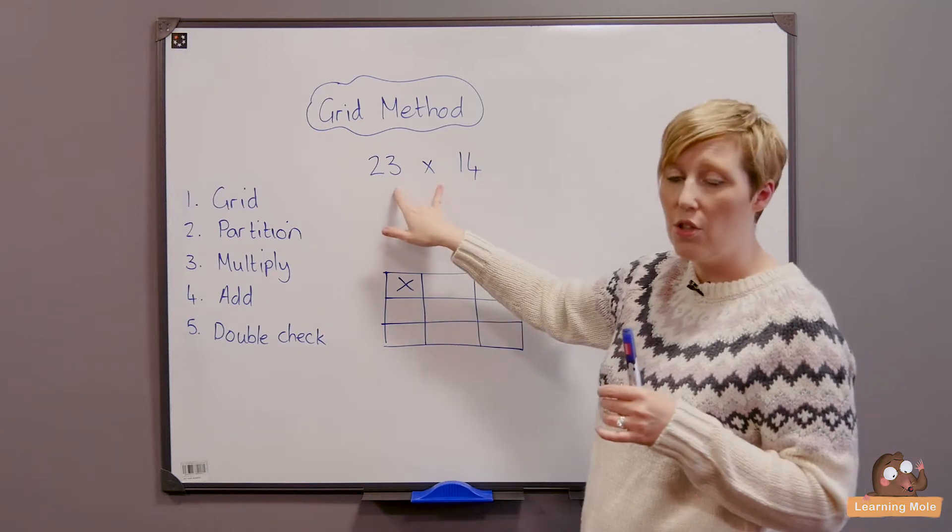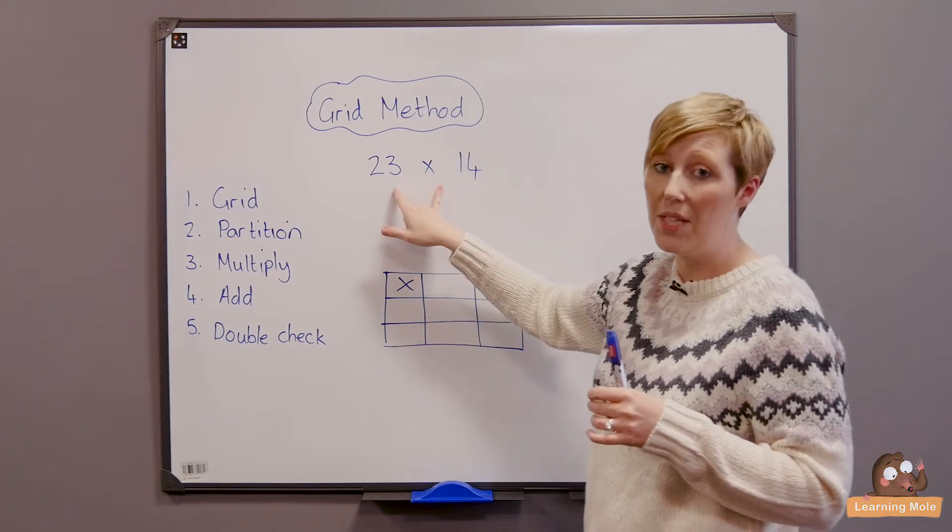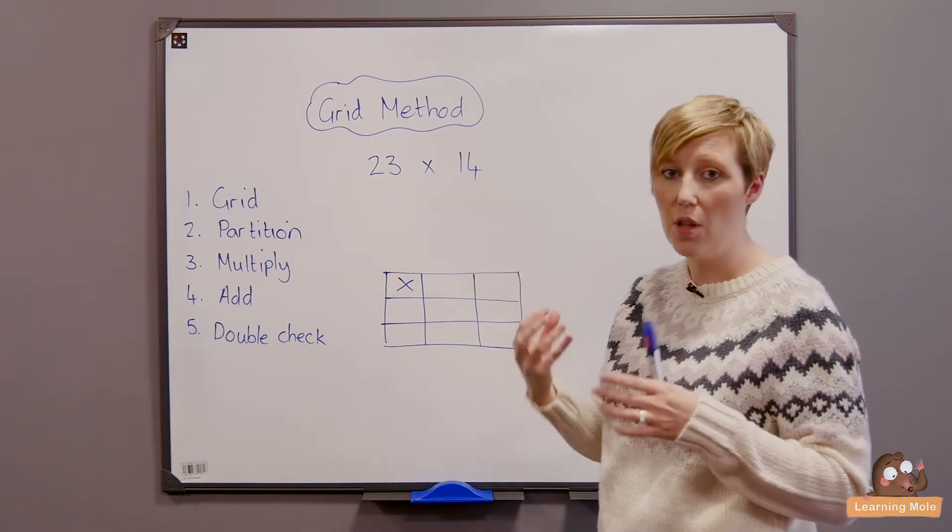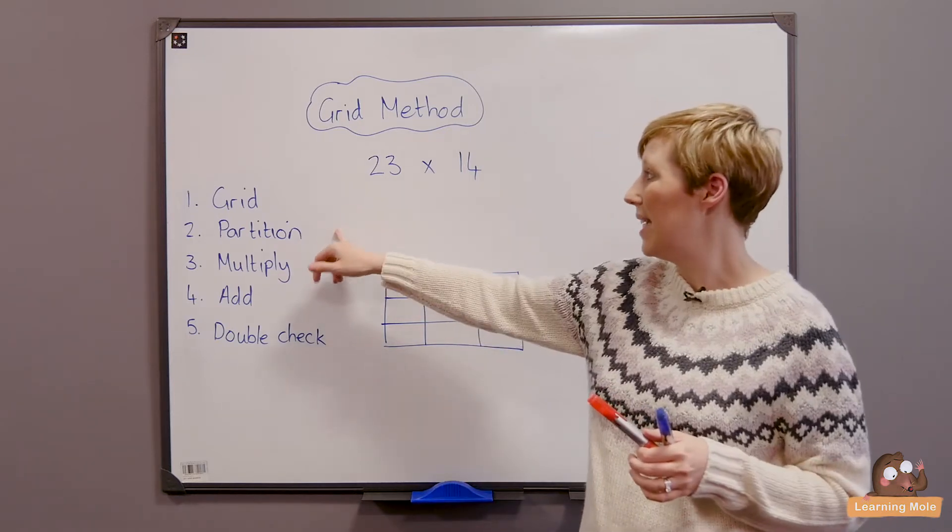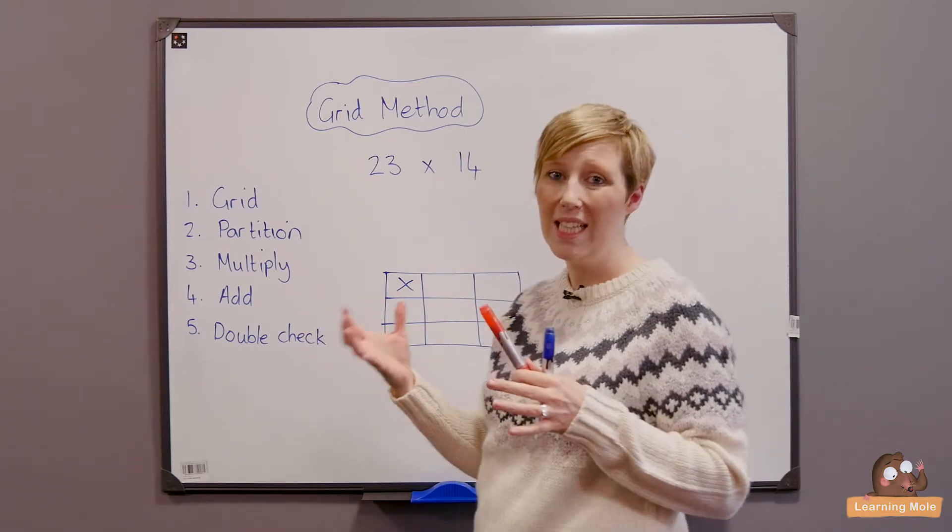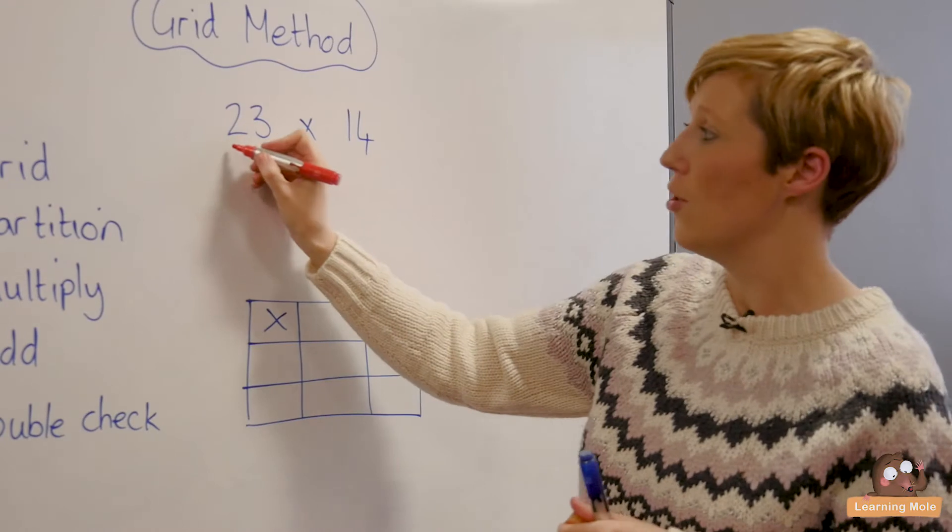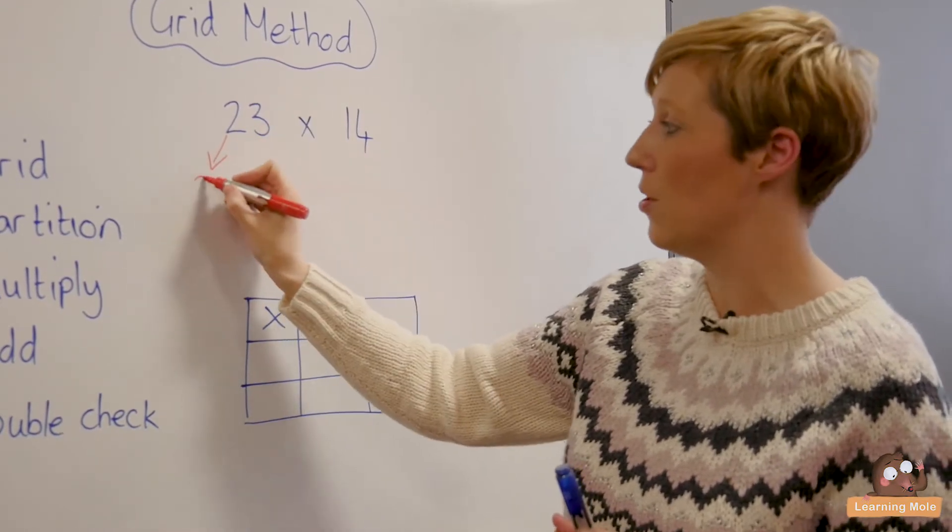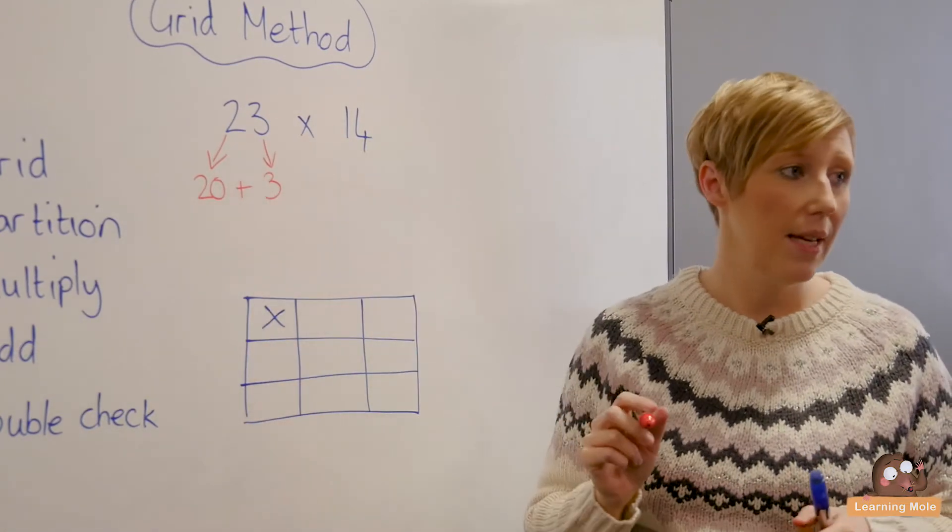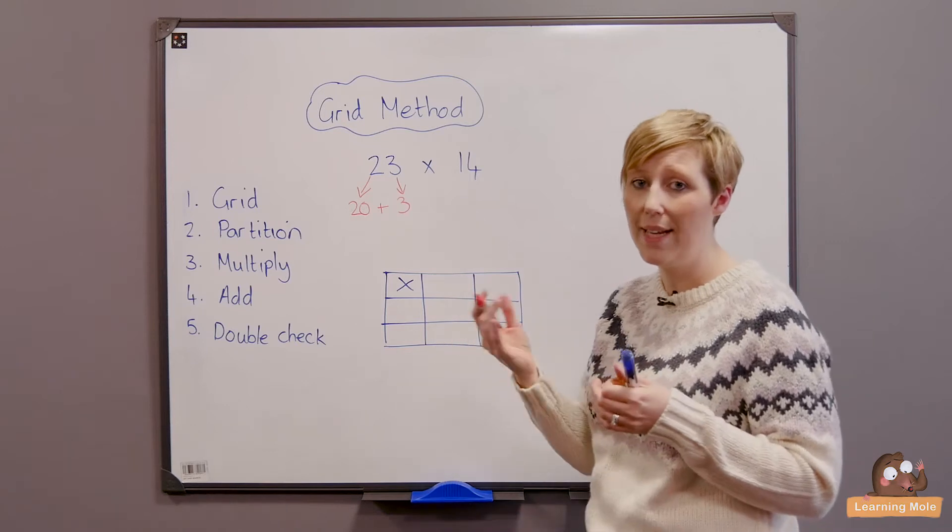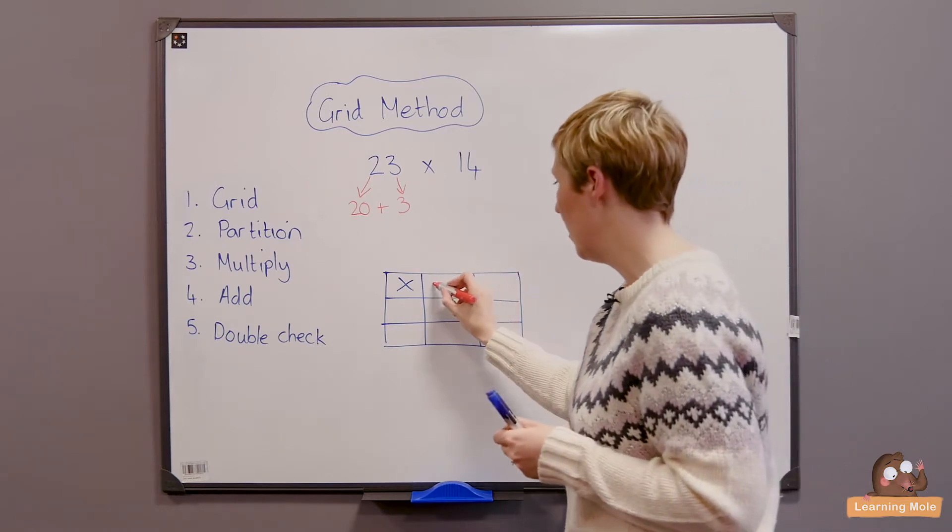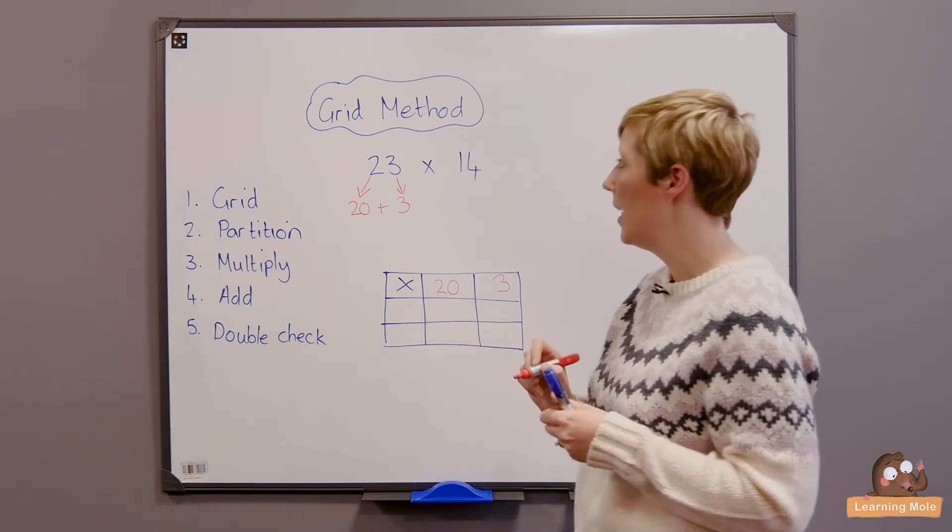The difference when you're using two two-digit numbers is that you have to partition both numbers, and it's very important to partition one at a time and put them into the grid so you don't mix up those numbers. We're going to start with partitioning the 23, back to the idea of partitioning into that tens number and units. So partitioning 2, which is 2 tens, which is 20, plus our 3. When we look back, 20 plus 3 is 23. We're not just writing the 2 tens, rather than the number it represents. We're going to put that straight into our grid: our 20 here and our 3 here.